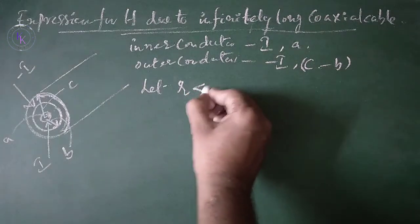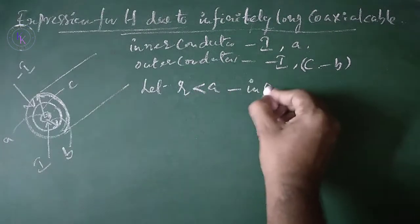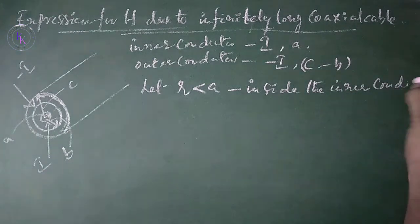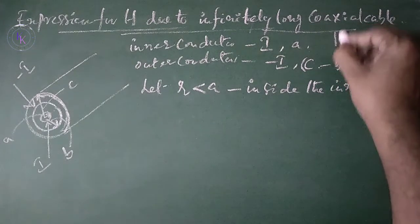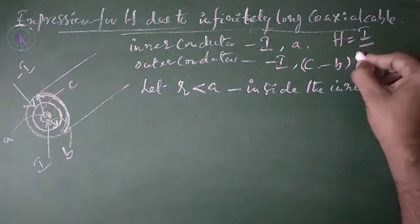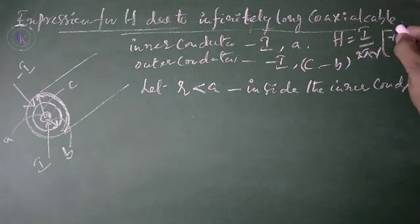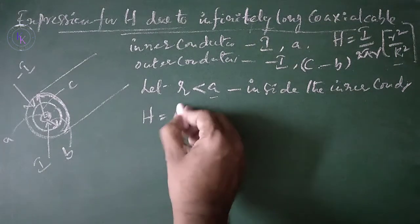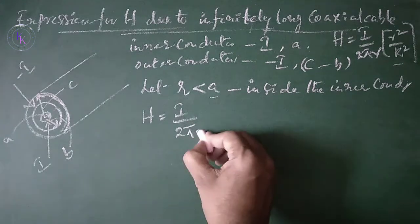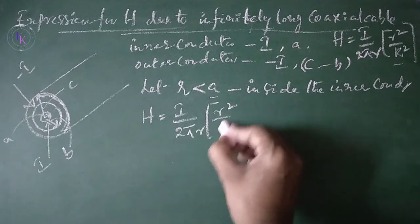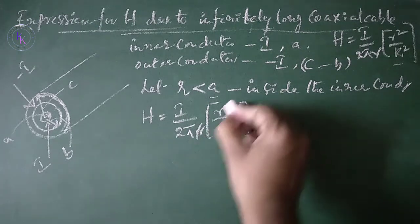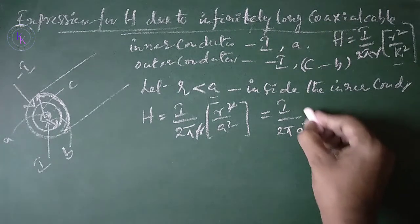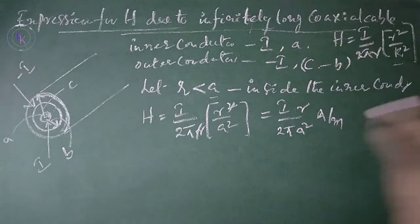For the region where R is less than a, which is inside the inner conductor, the formula is H equals I divided by 2πr, multiplied by r² divided by a². The r² terms cancel, giving magnetic field intensity H equals Ir divided by 2πa² amperes per meter inside the inner conductor.